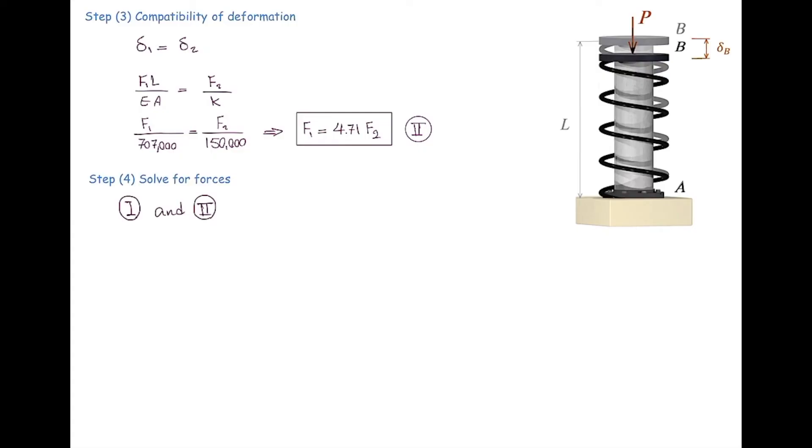So in this step, we are combining equation 1 and 2 and solve it for force. F1 is equal to negative 28.87 kilonewton, and F2 is equal to negative 6.128 kilonewton. Both of them are negative, which means both of these two forces are compressive, which makes sense because the external force is compressing both shaft and spring.